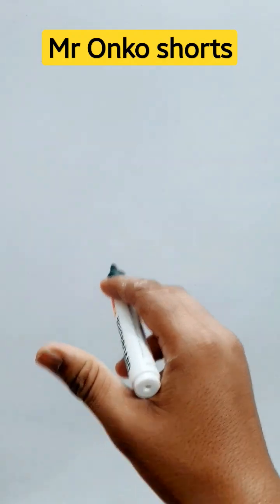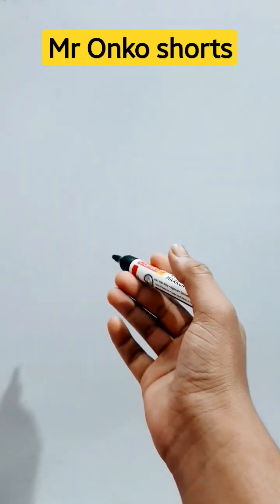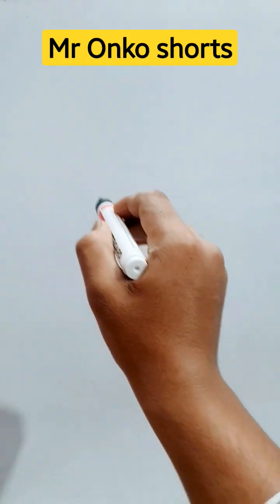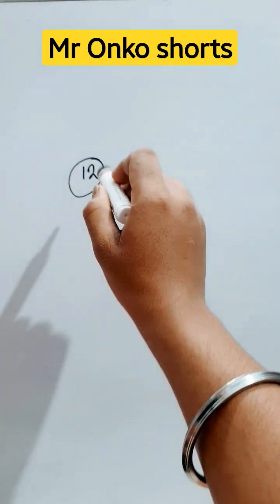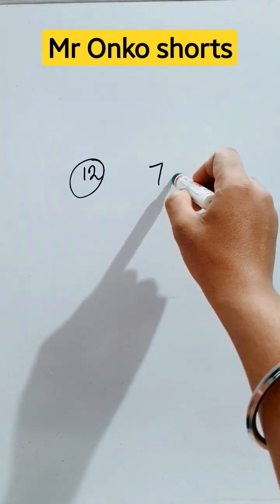Hello students, welcome to Mr. Onko Shorts. Today we will learn some tricks to solve combination problems. So first of all, we are given 12 points. Of them, 7 points are collinear.